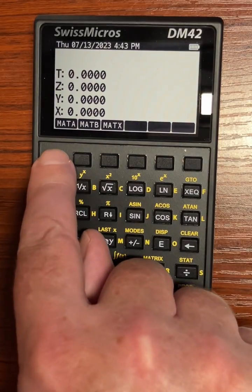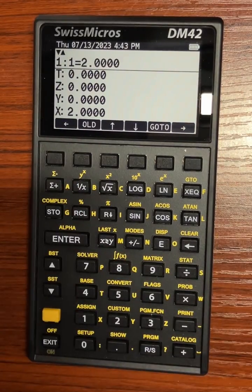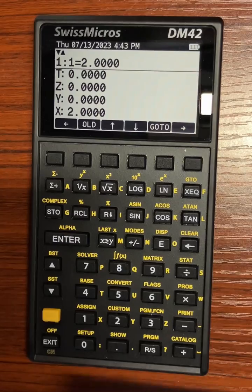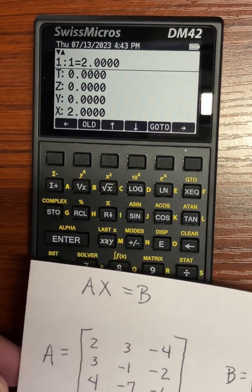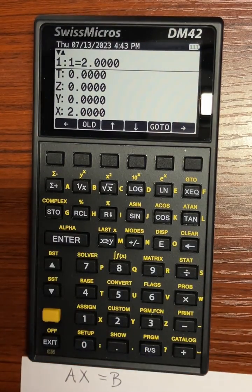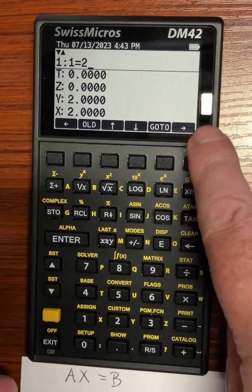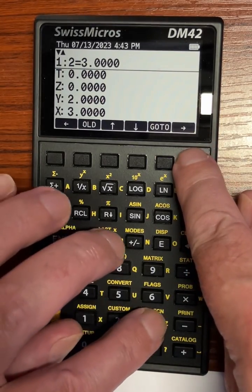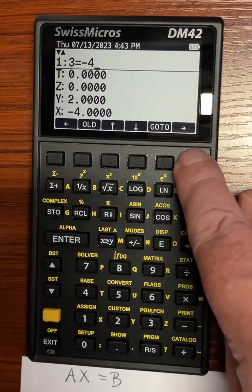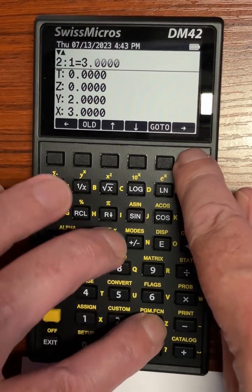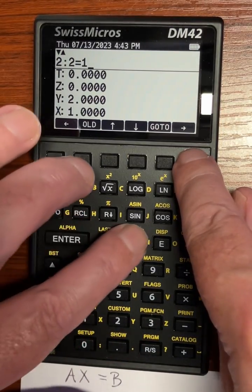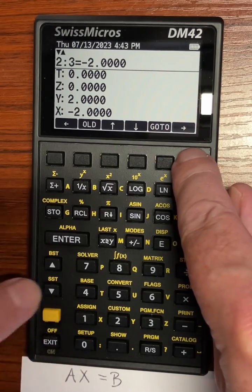Now you fill in your matrix A, which will be: two, three, negative four; three, negative one, negative two.